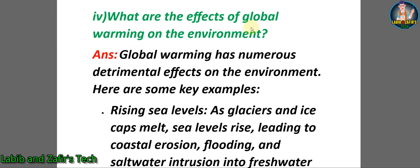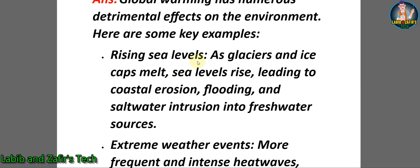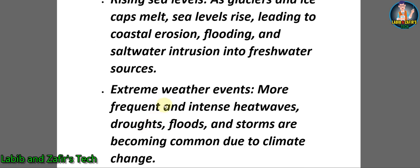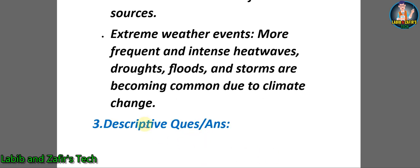Number four: what are the effects of global warming on the environment? Answer: global warming has numerous detrimental effects on the environment. Rising sea levels — as glaciers and ice caps melt, sea levels rise, leading to coastal erosion, flooding, and saltwater intrusion into freshwater sources. Extreme weather events — more frequent and intense heat waves, droughts, floods, and storms are becoming common due to climate change.